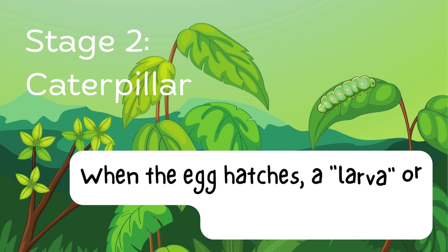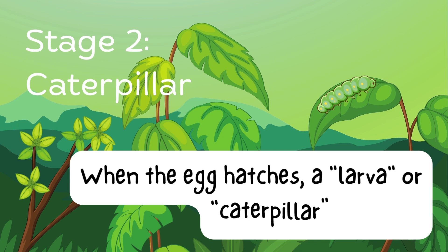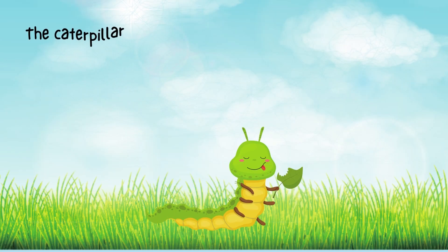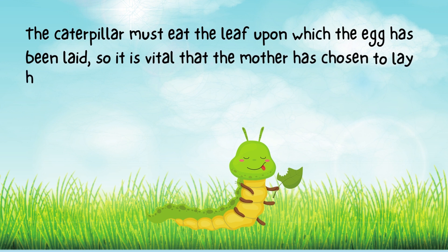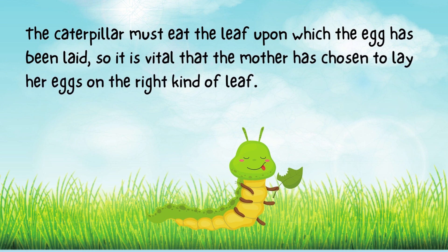The second stage is the caterpillar. When the egg hatches, a larva or caterpillar emerges. Caterpillars must grow quickly, so they eat continually. The caterpillar must eat the leaf upon which the egg has been laid, so it is vital that the mother has chosen to lay her eggs on the right kind of leaf.